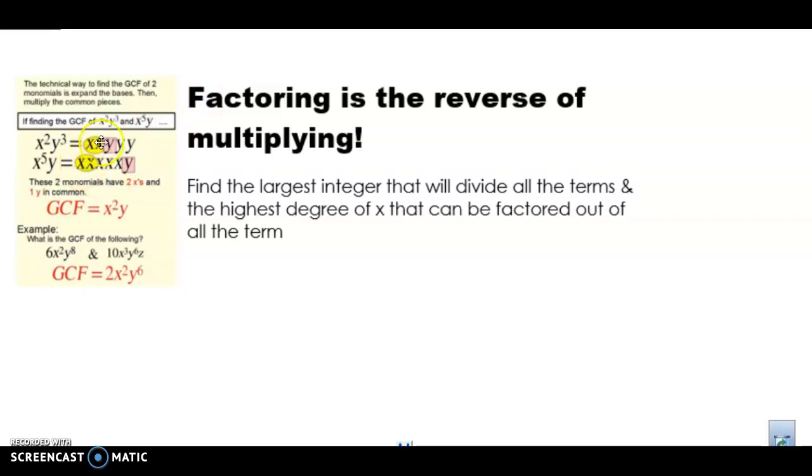And what they've done is they've grouped what they have in common. They each have two x's and they each have one y. So the greatest common factor of these two is x squared, because there's two, and y.